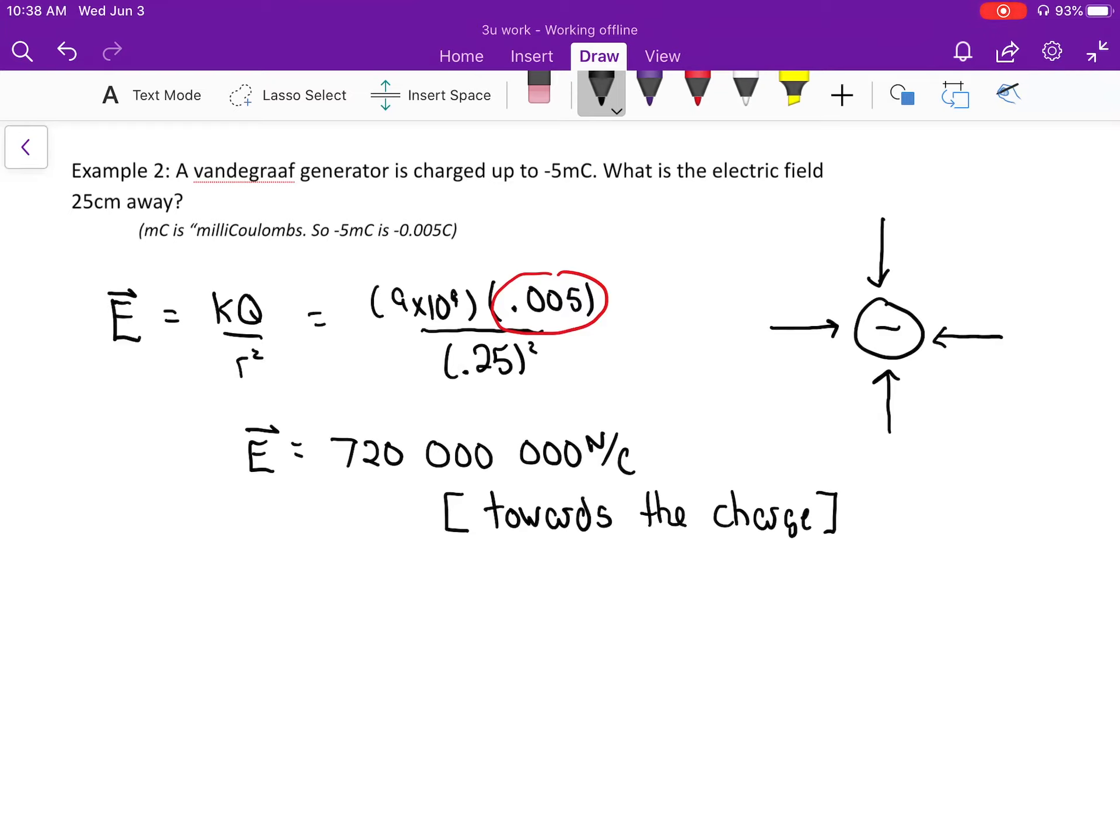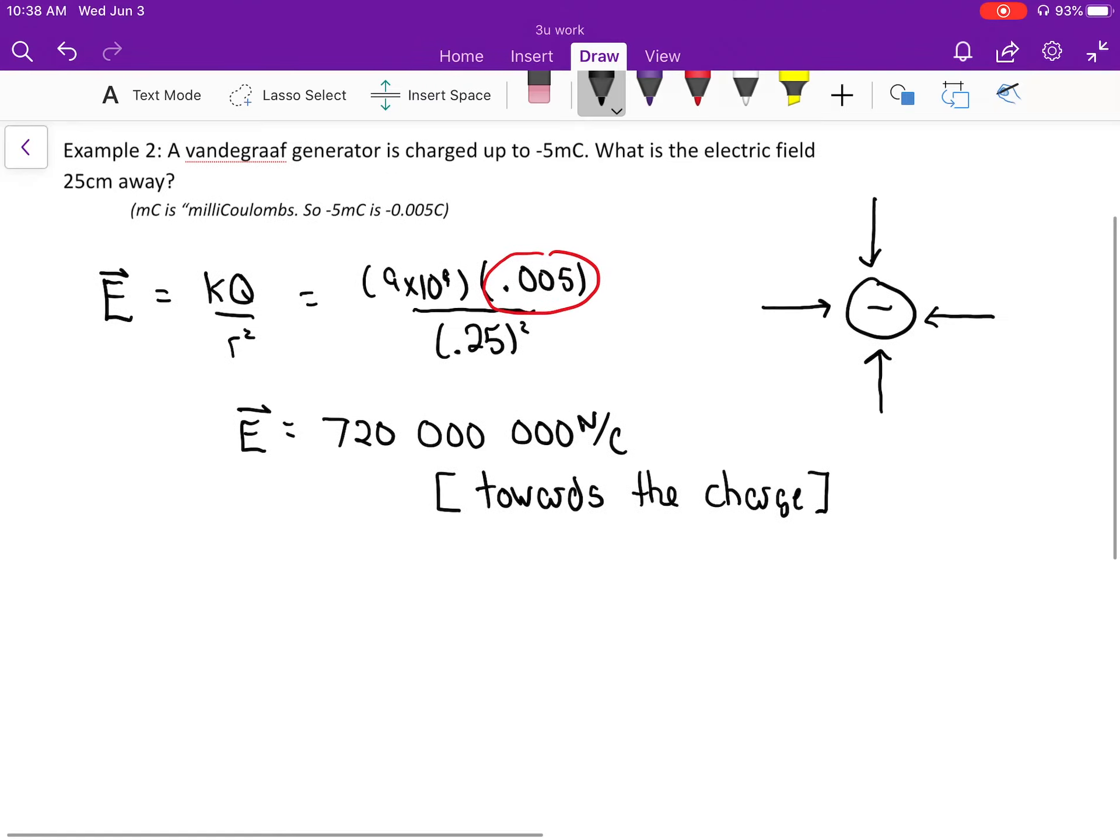Sometimes people get confused and think that the negative means down or something. In this particular sort of question, the negative tells us the type of charge, not anything to do with direction. We use our brain with a little diagram to figure out the direction. So don't put the negative in the equation. Crunch out the equation to get the number, and then doodle a little diagram or use your brain to get the direction. What I don't want to see you do is I don't want to see you write down, so this would be wrong. Don't write down something like electric field equals negative 720 million. That doesn't make any sense. What does a negative mean in that? So don't do that. Just write the electric field as the number with the unit and then the direction.